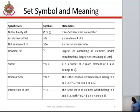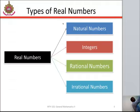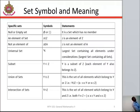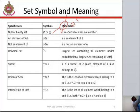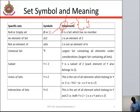We are going to be talking about characteristics of sets — the set symbols and their meaning. We can say we have a null set, represented with this symbol or this symbol. When you have something like this, we can say we have a null set. That is, a set which has no members at all.